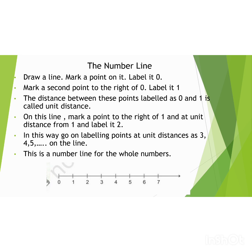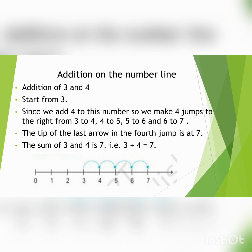With the help of this, we can do different operations: addition, subtraction, multiplication. Now, addition on the number line. Addition of whole numbers can be shown on the number line. We will show addition of 3 and 4. First draw the number line. Start from 3. Since we add 4 to this number, we make 4 jumps to the right from 3 to 4, then 4 to 5, 5 to 6, and 6 to 7. The tip of the last arrow in the 4th jump is at 7. So we can say the sum of 3 and 4 is 7. That is, 3 plus 4 equals 7.